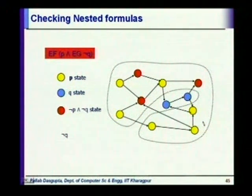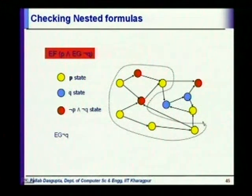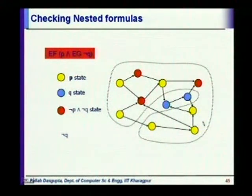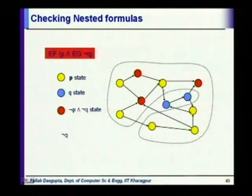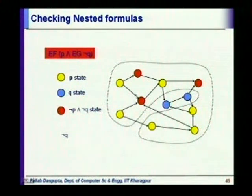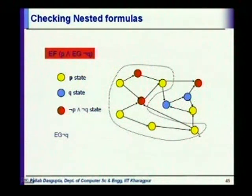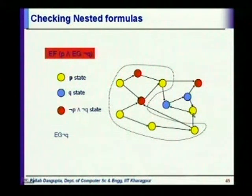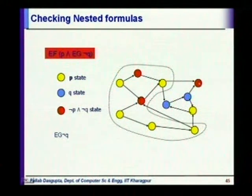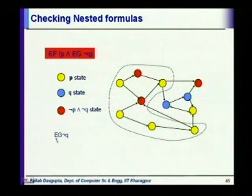Now we want to find out E G (not q). For E G (not q), it is not sufficient to just have not q — it has to be in a cycle where we have not q. Out of those states, some are in such a cycle. One state is not in a cycle containing only not q states because it has to go to the blue states. So we arrive at the set of states satisfying E G (not q) by eliminating those.